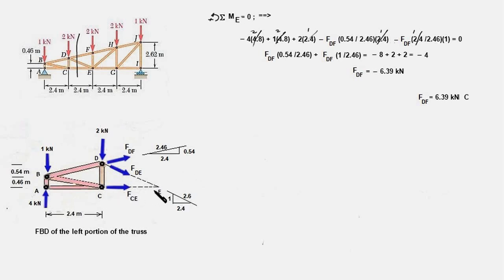We can ignore these two forces FDE and FCE because they pass through point E and their moment would be 0. To compute moment of force FDF, we'll first resolve it into vertical and horizontal components. The vertical component would be FDF times 0.54 over 2.46 and the horizontal component would be pointing towards right and its moment would be clockwise. The moment of the vertical component also would be clockwise.